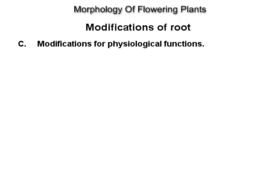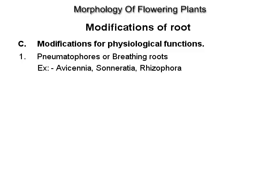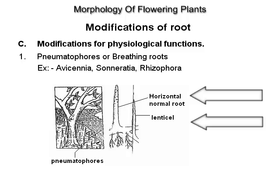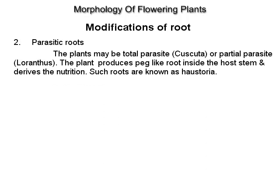Modifications for physiological functions. Pneumatophores or breathing roots, example Avicennia, Sonoracea and Rhizophora. Parasitic roots: the plants may be total parasites like Cuscuta or partial parasites like Loranthus. The plant produces peg-like roots inside the host stem and derives nutrition. Such roots are known as haustoria.